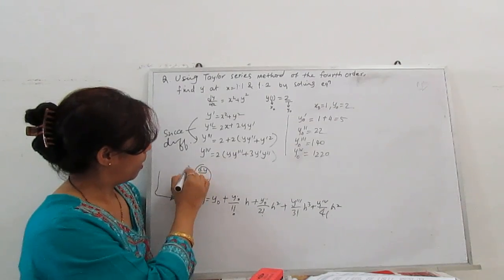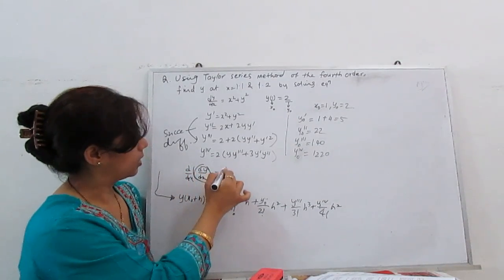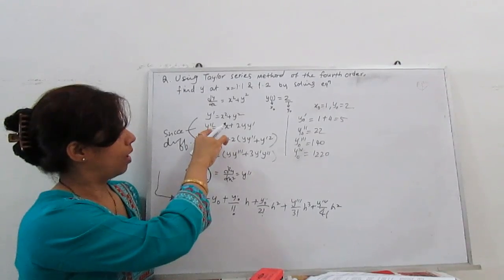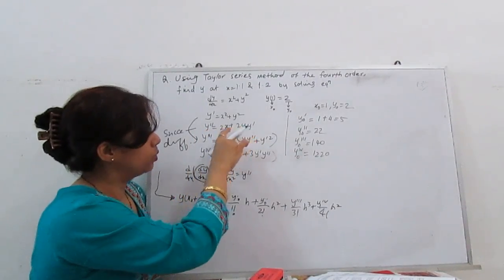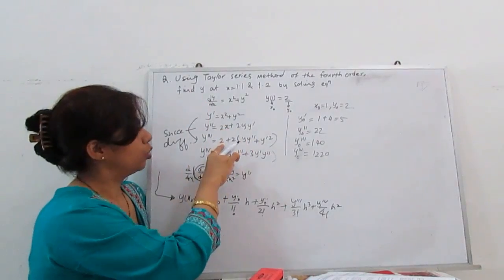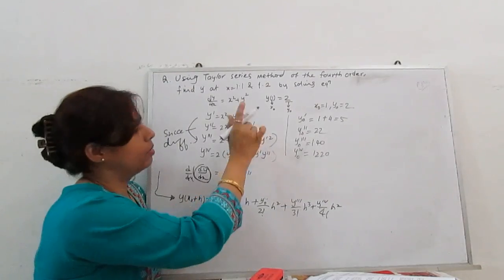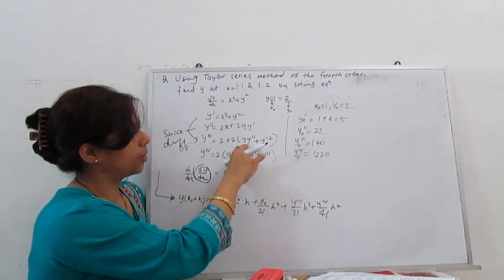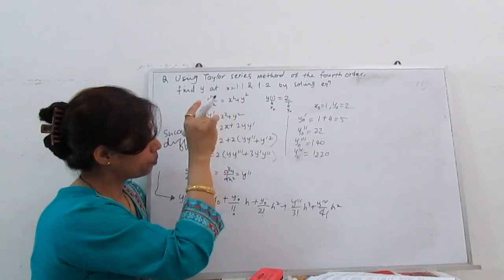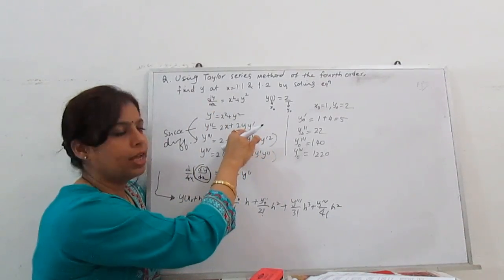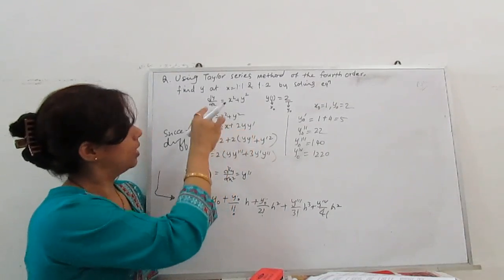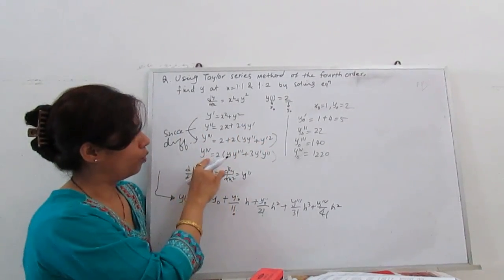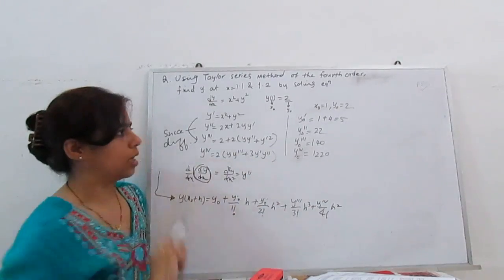y'' means d²y/dx², so when we differentiate y' = x² + y²: the derivative of 2x becomes 1, giving 2; then 2y·y'. Differentiating further: y'' differentiates to give 1 times y double-dash. For 2y·y': 2 is outside, differentiate y·y' using product rule — y' stays as y', and d/dx(y) = y', so y'·y' = (y')². For fourth-order, continuing the same differentiation process gives us the higher-order terms.